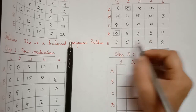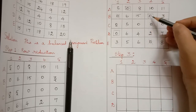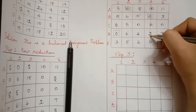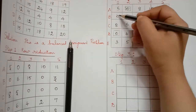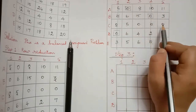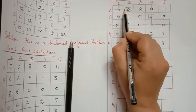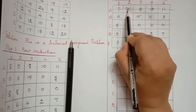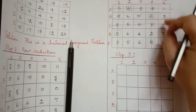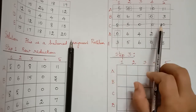When covering zeros, the lines drawn must be a minimum number. We see three zeros in one column, so we draw a line to cover them. Then there are two zeros in another column, so we draw another line. The remaining zeros require a line across one row and a line across another row. We need a minimum of four lines to cover all the zeros — it is not possible with three lines.